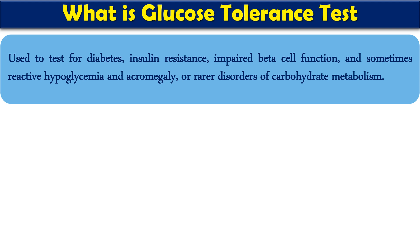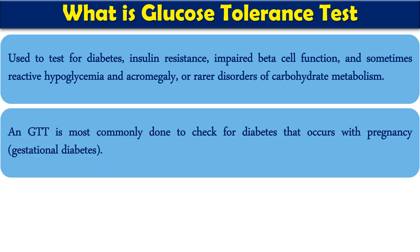This test is used to diagnose insulin resistance, impaired beta cell function, impaired insulin activity, and sometimes reactive hypoglycemia and certain endocrine functions — for example, in cases of hyper-pituitarism, hyperthyroidism, or hyperadrenalinism. GTT is most commonly done to check how glucose is going to be tolerated, especially in the case of pregnancy — that is, gestational diabetes mellitus.